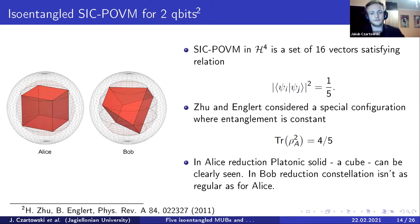Another example that is quite relevant is a SIC POVM for dimension 4, analyzed by Zhu and Englert. They provided a very characteristic configuration, which has a constant entanglement over all states. And if we consider the reductions to Alice and Bob, we are seeing very regular shapes. For Alice we see a cube, that is the platonic solid, and for Bob it is something different, yet still one can recognize certain regularities.